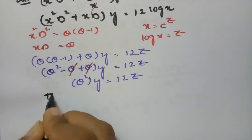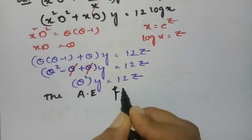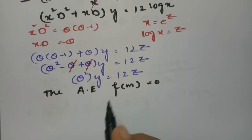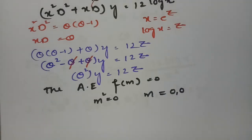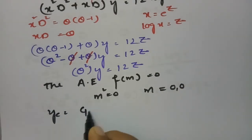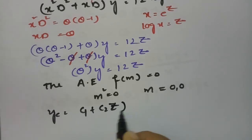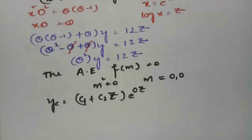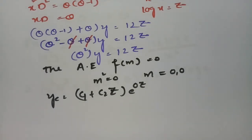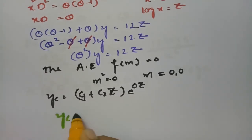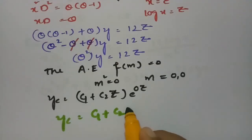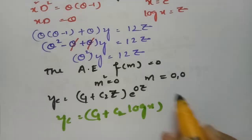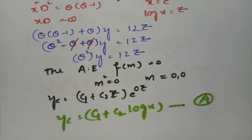Coming to the solution: the auxiliary equation is f(m) = 0. Replacing θ with m gives m² = 0, which implies m = 0, 0. These are repeated roots, so the complementary function yc = (c1 + c2*z) * e^(0·z). Since e^(0·z) = 1 and z = log(x), we get yc = c1 + c2*log(x).